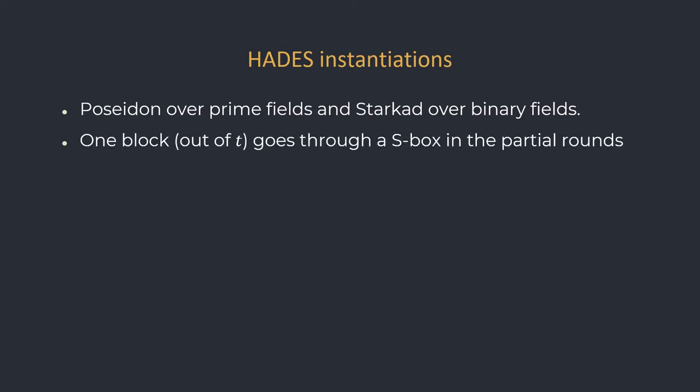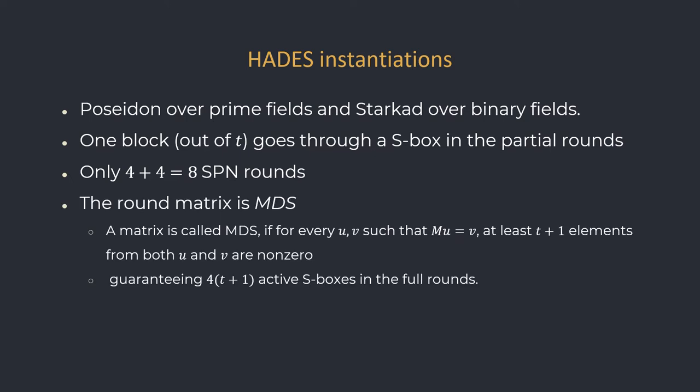Each of Poseidon and Starkad can be parameterized. We denote by T the number of blocks in a variant, which is the number of S-boxes in a full round. In all variants, only one block out of T goes through an S-box in partial rounds. The number of full rounds before and after the middle partial rounds is always 4, while the number of partial rounds in the middle changes between variants. The matrix chosen for the linear transformation is an MDS matrix, meaning that in every two adjacent full rounds, at least T plus 1 S-boxes are active. The security guarantee of both Poseidon and Starkad is 4 times T plus 1 active S-boxes in each characteristic.